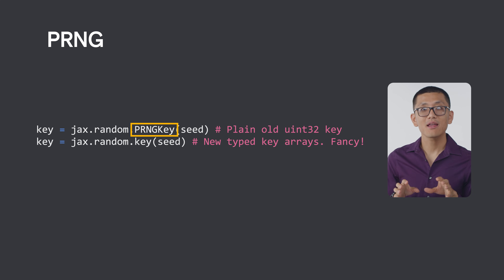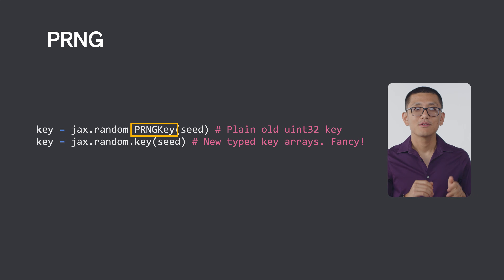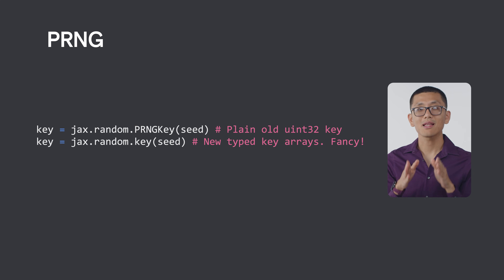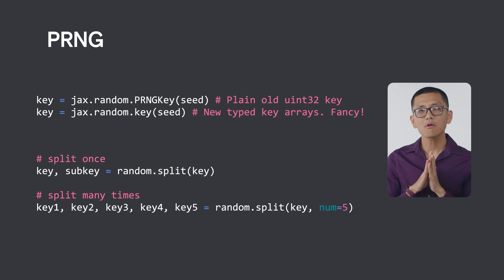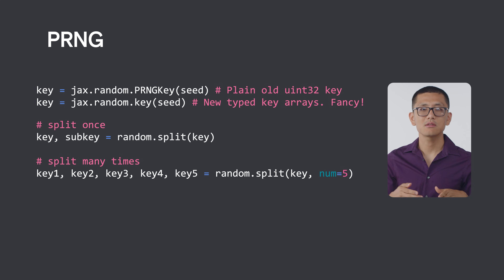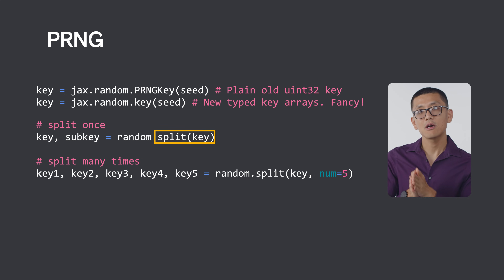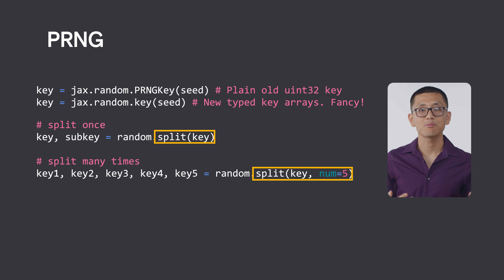A PRNG key is an array that serves as the explicit random state, and JAX's random functions read this key but without modifying it — because if it did, remember, then it's not pure. So providing the same key will always produce the same random sample, ensuring reliable reproducibility. Of course, we don't always want to use the exact same random state throughout the entire program. Sometimes we want to get a new state or pass a bunch of new states into different parallel threads. So to get different statistically independent samples, you must explicitly split that PRNG key into new subkeys before each use.